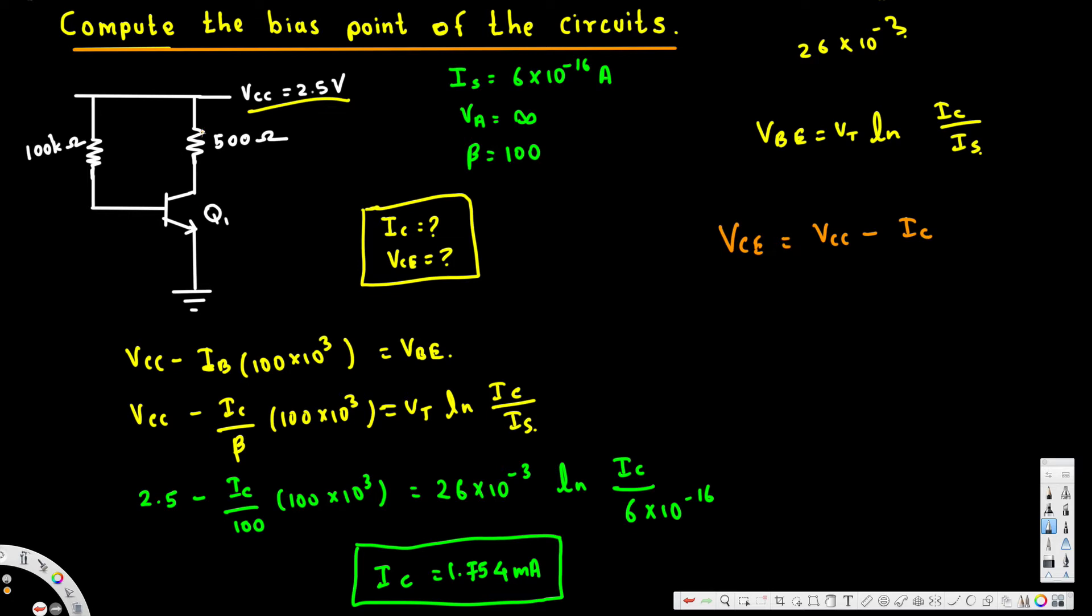Ic times Rc, that's the resistor across the collector. Let's go ahead and directly write the value 500 ohm. Now Vcc is 2.5 minus Ic we just calculated, that is 1.75 milli times 500.